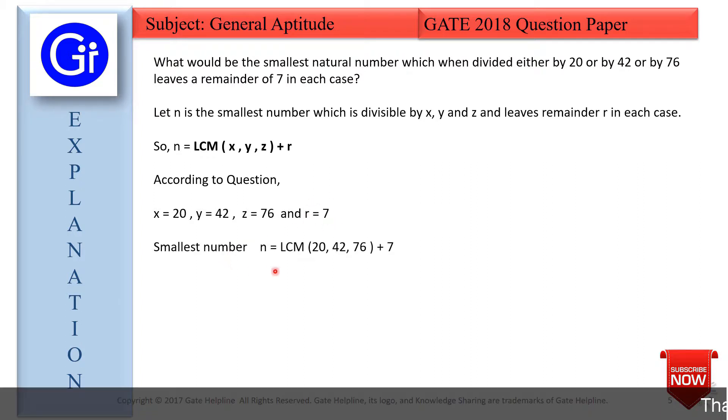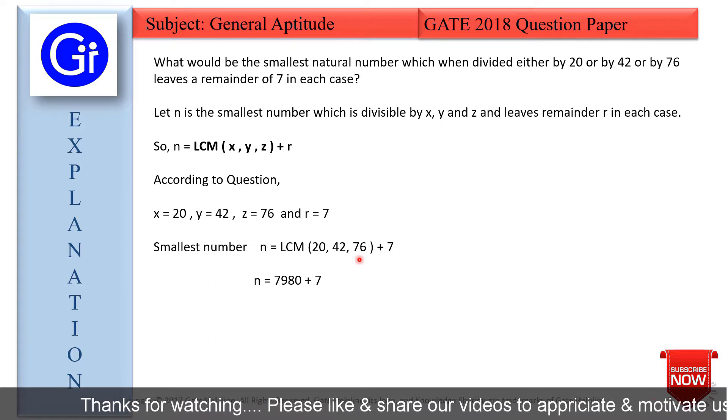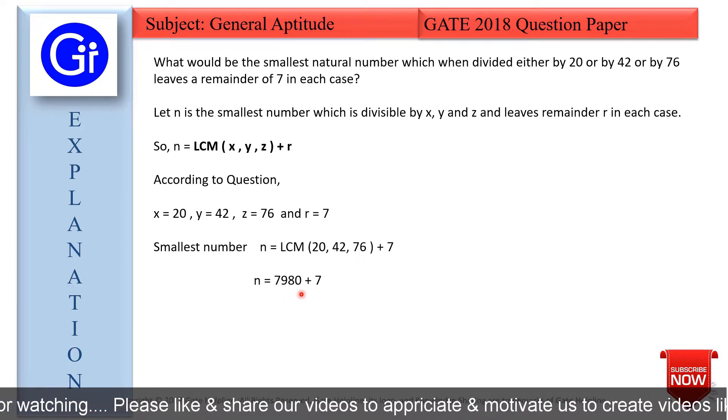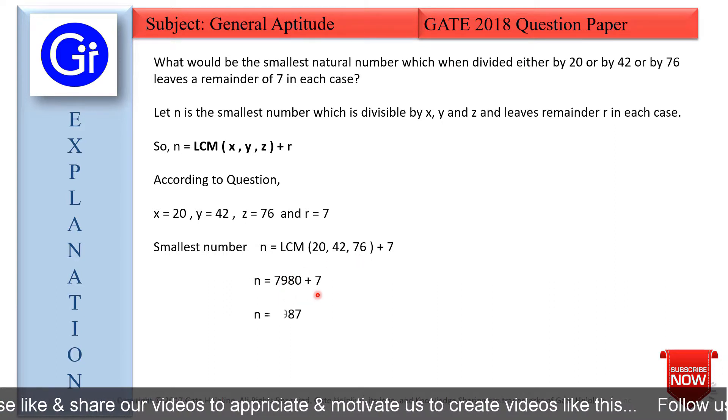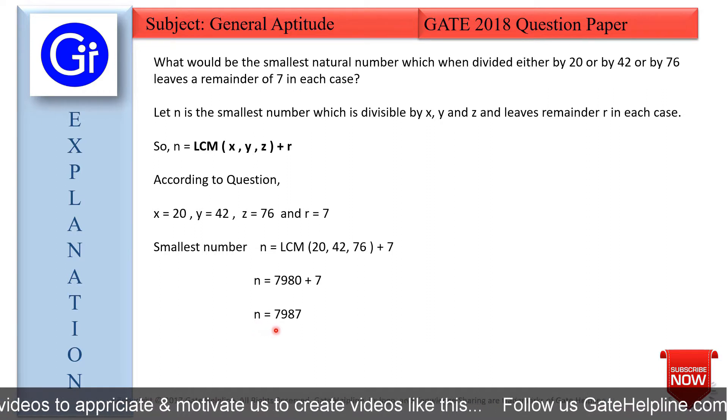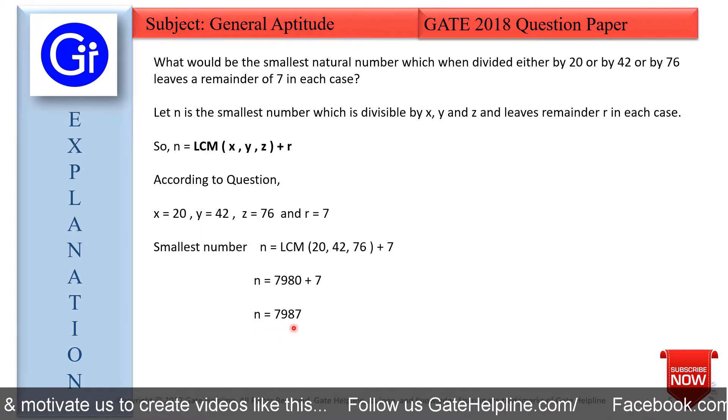So smallest number n is LCM of 20, 42, 76 plus 7. The LCM of 20, 42, 76 will result in 7980 plus 7. So n will be 7987.